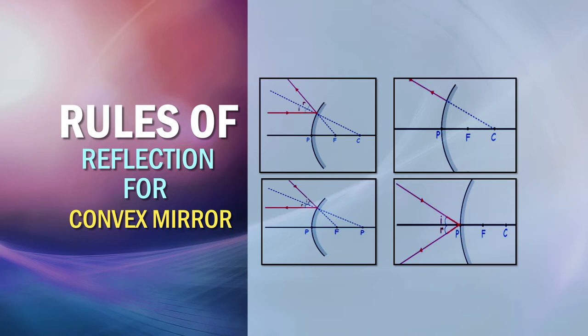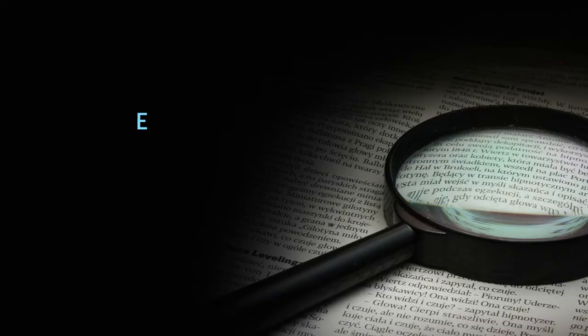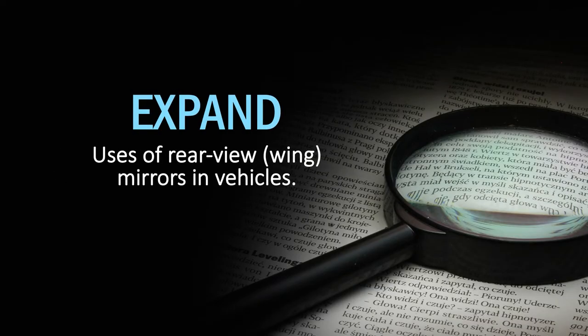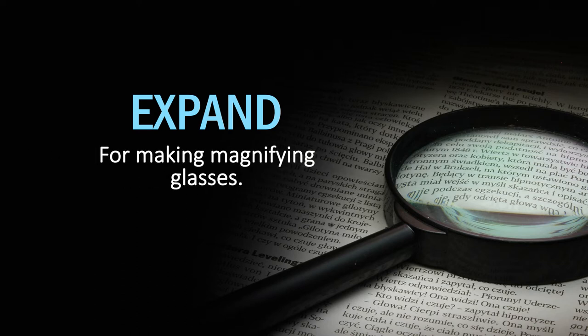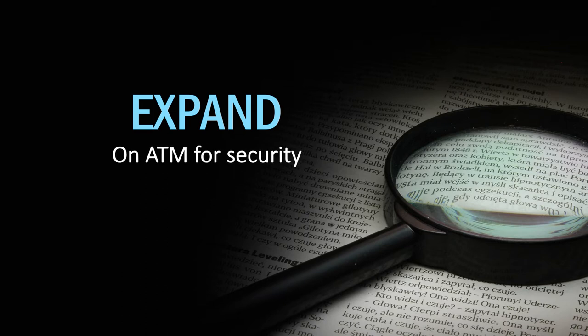If a ray of light comes towards the center of curvature, it reflects back with the same path. If a ray falls at point P, it reflects with the same angle on the opposite side of the principal axis. These four rules are important when talking about reflection from a convex mirror. Convex mirrors are used as rear-view mirrors in vehicles, sometimes called wings of the car. They are used for magnifying glasses, and inside buildings for security — ATMs also use such mirrors. Let students identify the characteristics of these mirrors and correlate with the properties of image formation discussed in class.